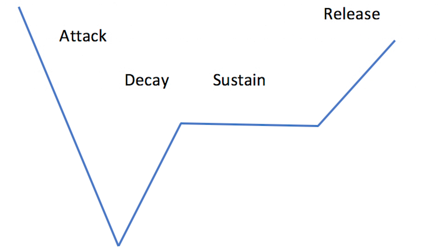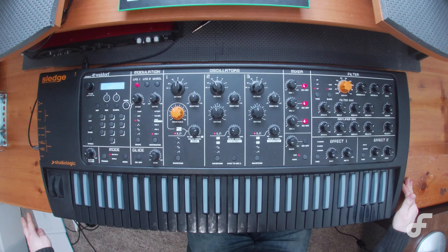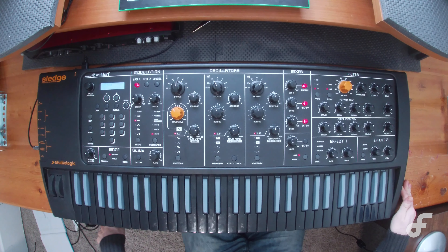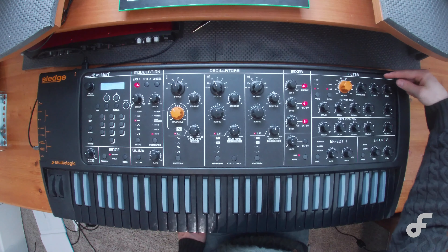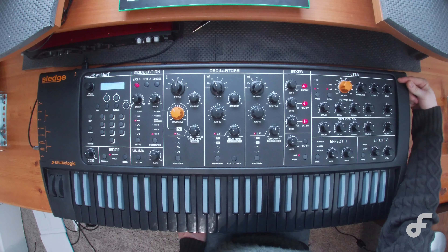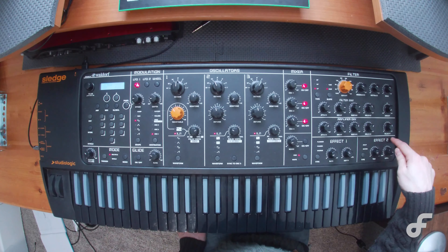With this new graph we can see that negative envelopes react a little bit differently. But how do they react? In order to explain that, let's dive into my Sledge and let me show you an example. I'm going to be looking specifically at the filter envelope on the Sledge, because amplitude envelopes can't exactly go to a negative value — I'll explain why that is in a little bit.